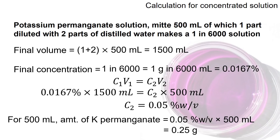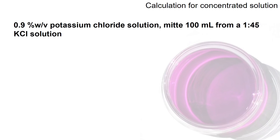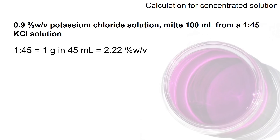In the second example, you are required to prepare 100 ml of 0.9% w/v potassium chloride solution from a concentrated one with a concentration of 1 in 45. First, you need to understand what 1 in 45 means — it means 1 gram in 45 ml. When you convert it into percentage w/v, you get 2.22%, which standardizes it so we can use the C1V1 = C2V2 equation with consistent units.